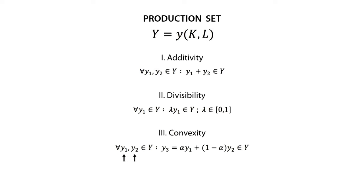Convexity says that if Y1 and Y2 are elements of the production set Y, then a combination of both, such as Y3, is also an element of the production set.